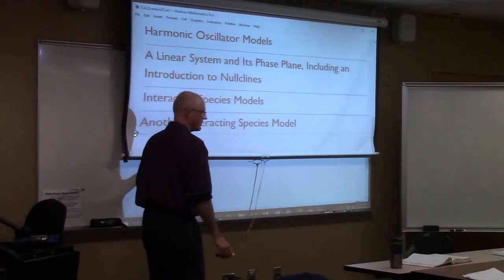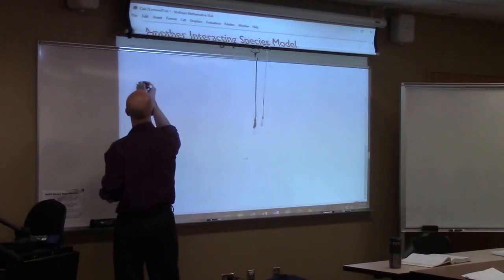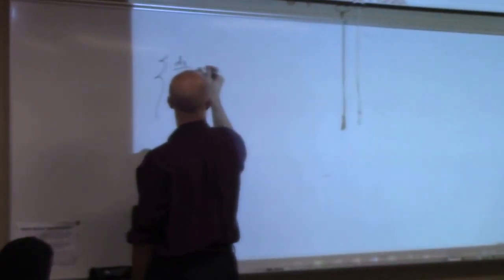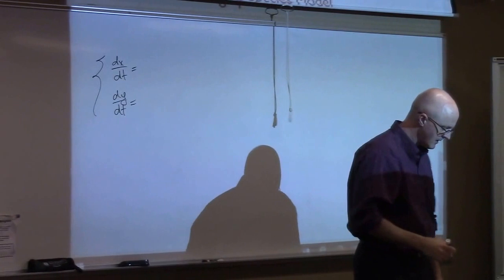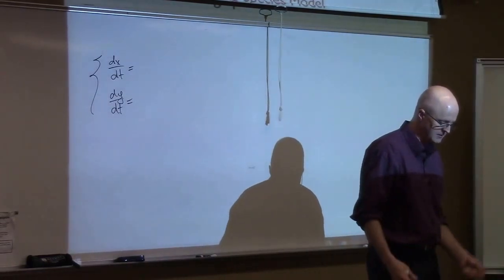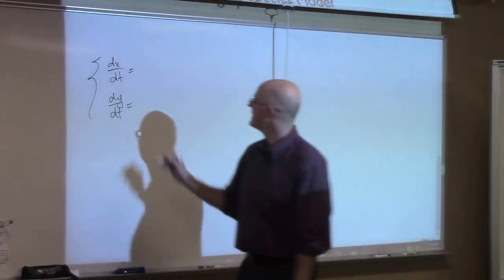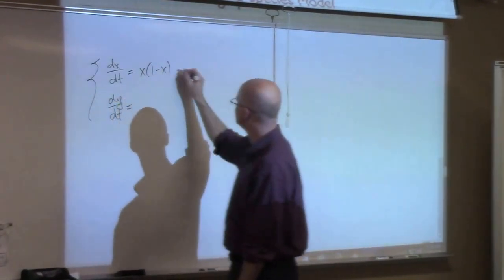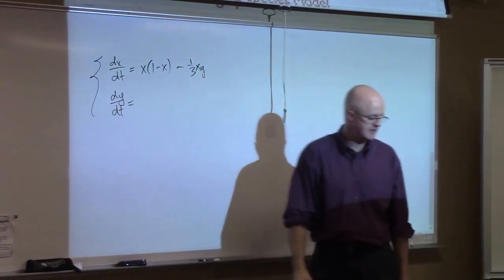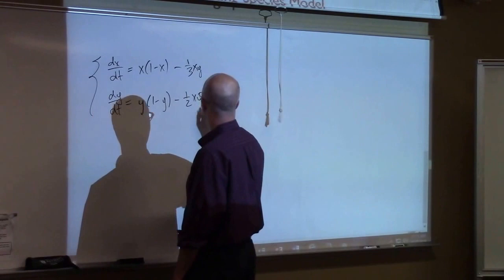I'm going to write the differential equations a little differently at first from what the book does. It's a system — you're considering these equations together: dx/dt and dy/dt. So x and y are populations of certain species. Problem 17 is a competing species model — the interaction terms have negative coefficients. If you multiply x partially through the parentheses, the equations look like this: x(1 − x − (1/3)xy) for dx/dt, and y(1 − y − (1/2)xy) for dy/dt.